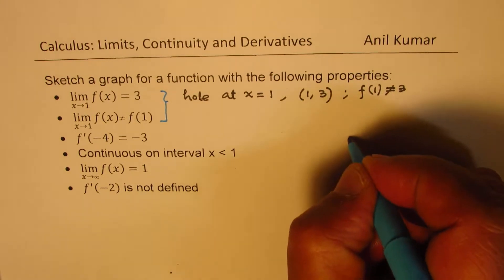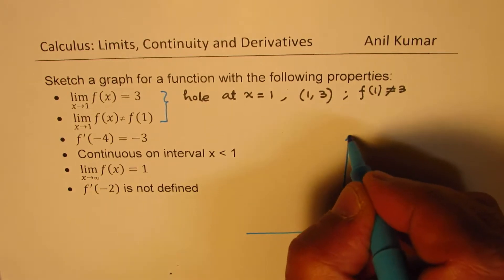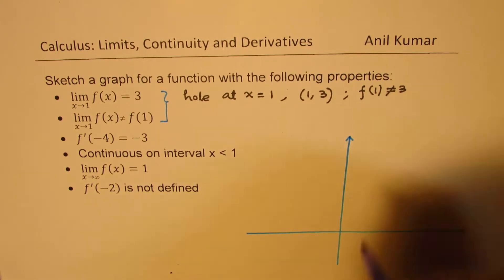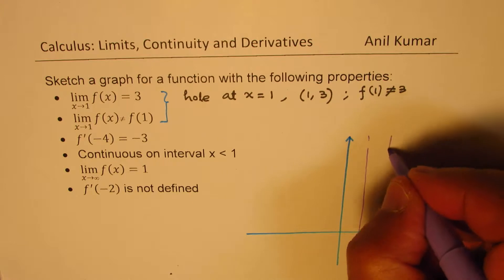So let's try to sketch this from the conditions given to us. So let us say that this is 1 for us.